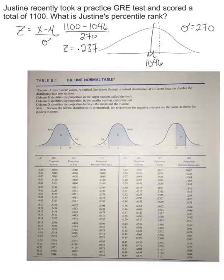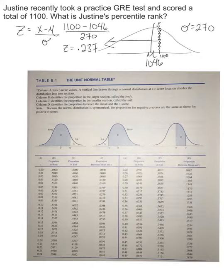Here's our normal distribution with mu of 1,046. She scored slightly above the mean at 1,100. The right-hand side is the tail — it's a big tail but still smaller than the left-hand side because it crosses the mean. The body is on the left and the tail (in blue) is on the right.